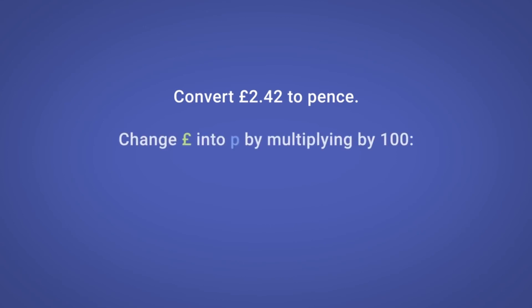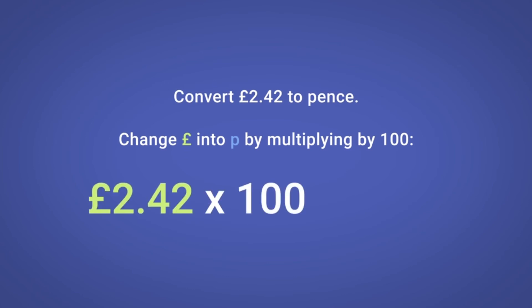Convert two pounds forty-two to pence. We can change pounds into pence by multiplying by 100. Two pounds forty-two multiplied by 100 equals two hundred and forty-two pence.